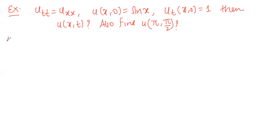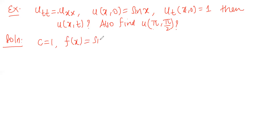We will simply find the solution using D'Alembert's method and then plug in π and π/2 for x and t. Comparing with the standard form, we get c = 1, f(x) = sin(x), and g(y) = 1, which is the derivative condition.